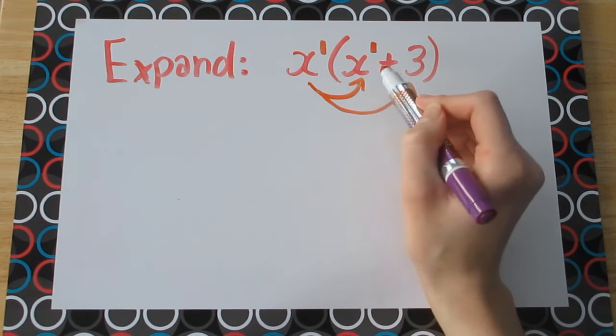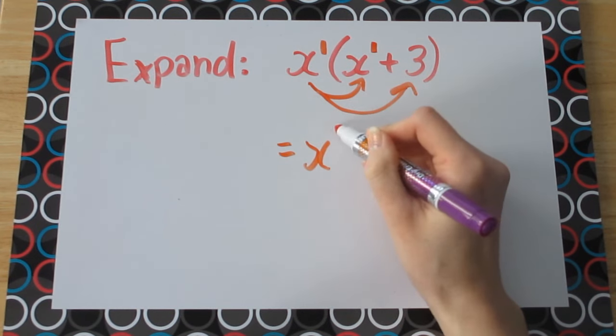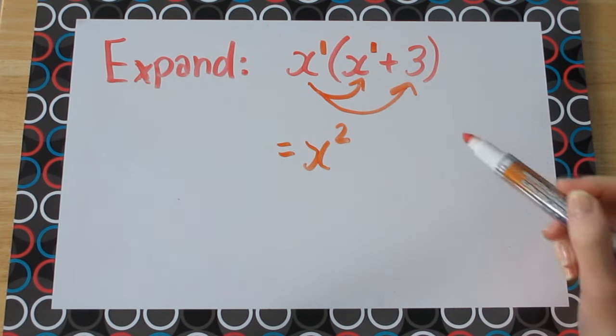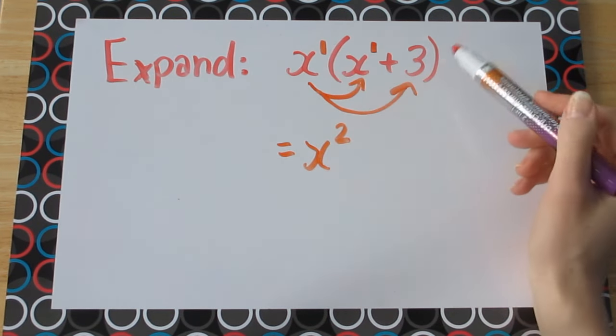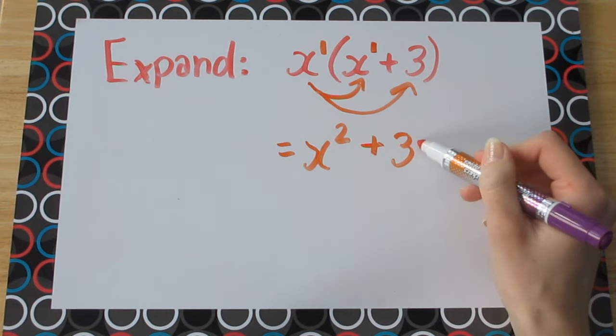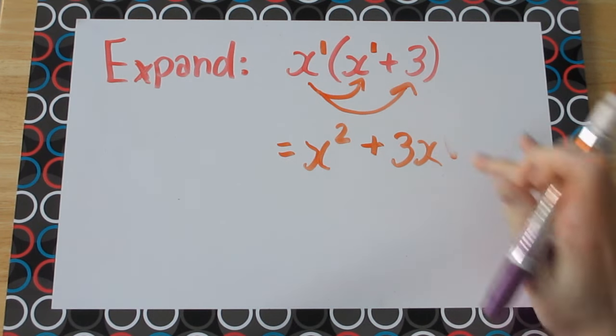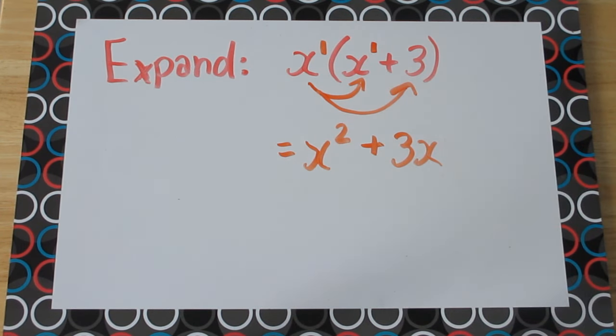So here we have x with an imaginary exponent of 1 and another imaginary exponent of 1 over here as well on this x. So when we multiply, we're going to be adding exponents. So here we have a single x plus a single x. That will give us x to the power of 2. And when we take that x to the power of 1 and multiply it with positive 3, we're going to get 3x. We're going to be using this exact same technique to handle a factoring question.